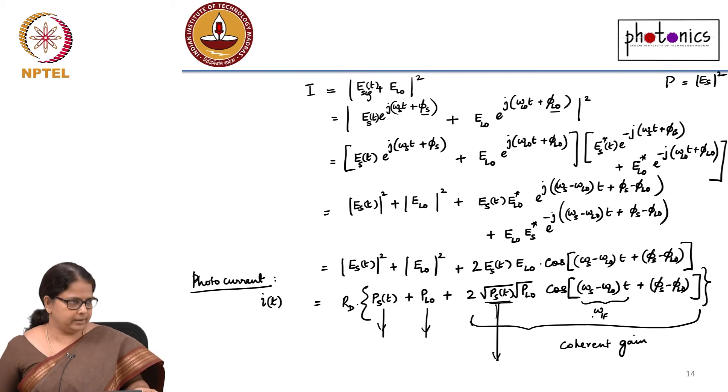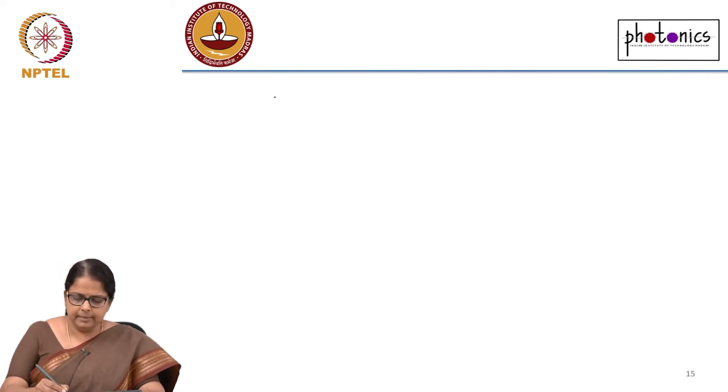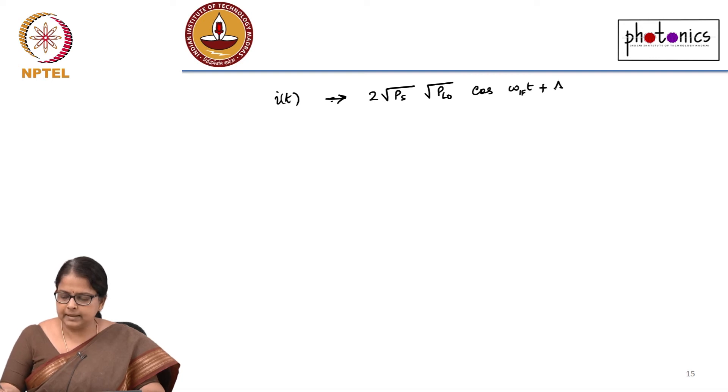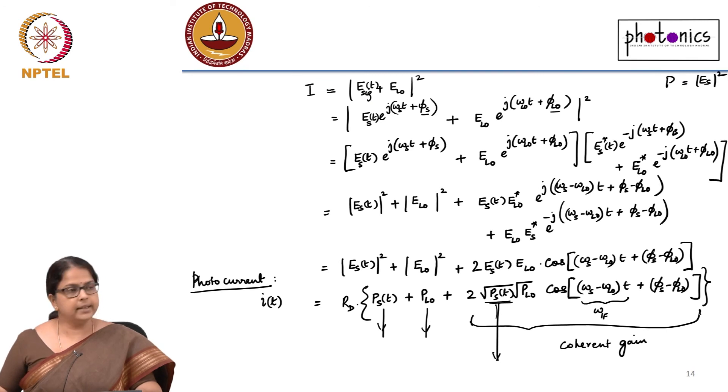The question is what is the benefit of doing this? Before we get into the benefit of doing this, what I am now interested in is this term which is 2√(P_s P_LO) cos(ω_IF t) + Δφ, where my Δφ is φ_s - φ_LO. That is what I had here. Now I am looking at this term.